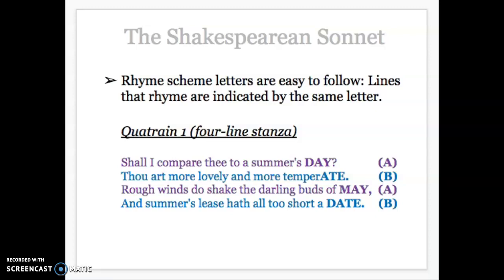Let's move forward with Sonnet 18. These are just the first four lines, and as a reminder, the rhyme scheme is marked there on the right. The rhyme scheme is pretty easy to follow — lines that rhyme are indicated by a letter. So lines one and three rhyme, that's why there are A's in parentheses on the right, and the second and fourth lines also rhyme, that's why there's a B.